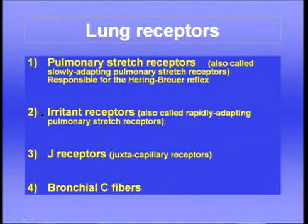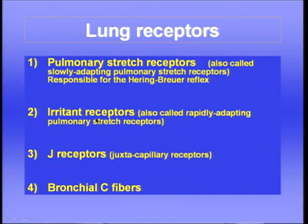There are also irritant receptors, sometimes called rapidly adapting stretch receptors. These mainly respond to irritants such as inhaled cigarette smoke, smog, toxic gases, and cold air — all of which stimulate the irritant receptors in the bronchial walls. The result is often bronchoconstriction, and some people think the irritant receptors play an important part in asthma. For example, patients with asthma often develop an attack if they breathe cold air, and that's probably because of the irritant receptors.